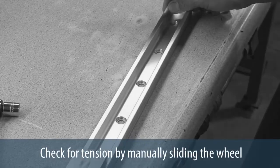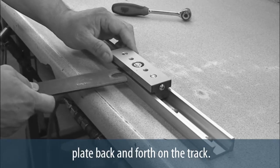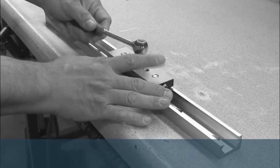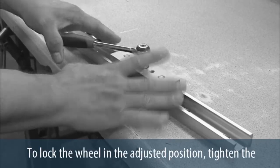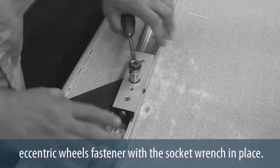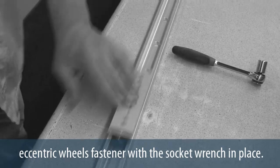Check for tension by manually sliding the wheel plate back and forth on the track. To lock the wheel in the adjusted position, tighten the eccentric wheel's fastener with the socket wrench in place.